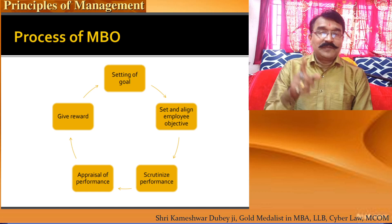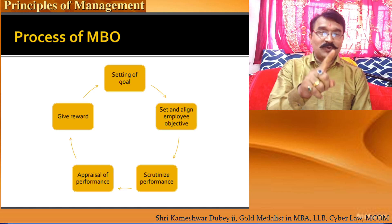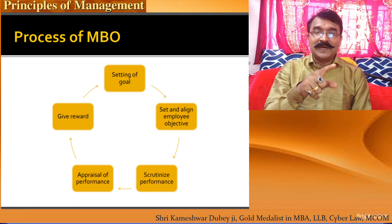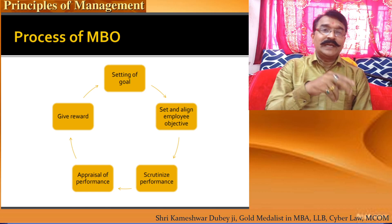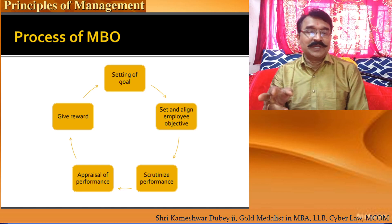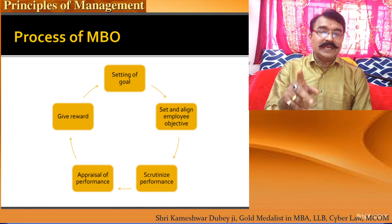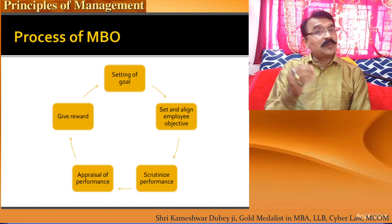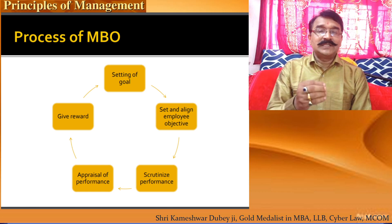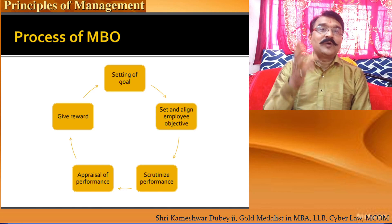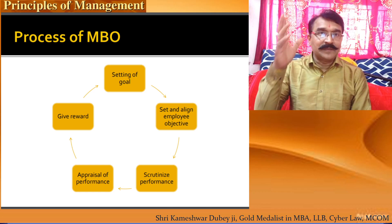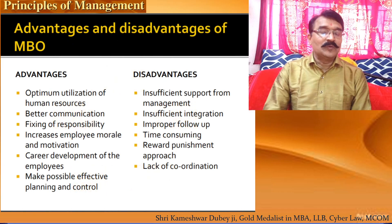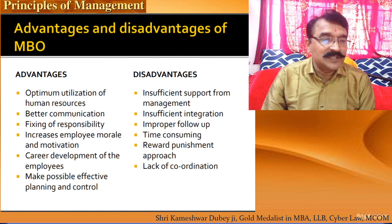The process of MBO works as follows: first, setting of the goal — done by both subordinates and superiors together; second, setting aligned employee objectives; third, scrutinizing performance; fourth, appraisal of performance; and fifth, rewarding employees. This is the complete process of MBO.